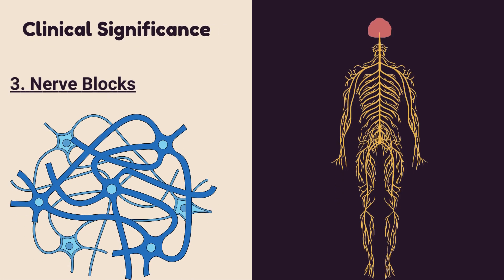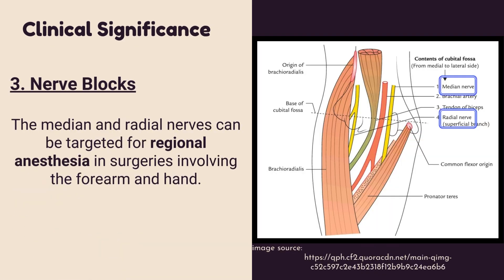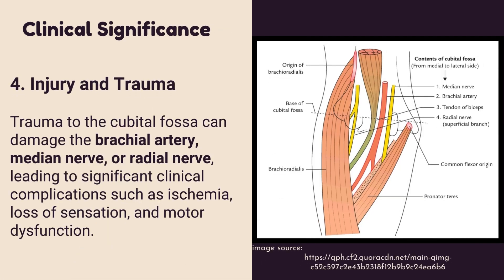For nerve blocks, the median and radial nerves can be targeted for regional anesthesia in surgeries involving the forearm and hand. Regarding injury and trauma, trauma to the cubital fossa can damage the brachial artery, median nerve, or radial nerve, leading to significant clinical complications such as ischemia, loss of sensation, and motor dysfunction.